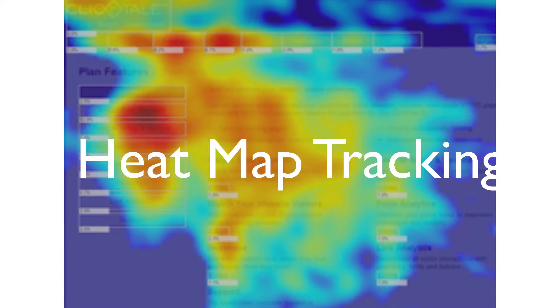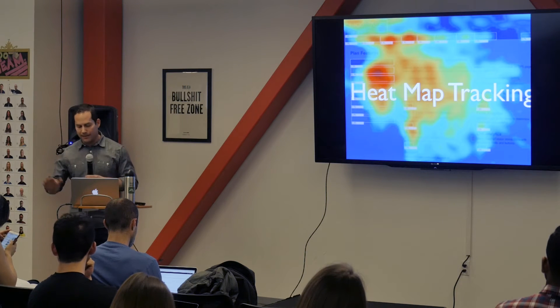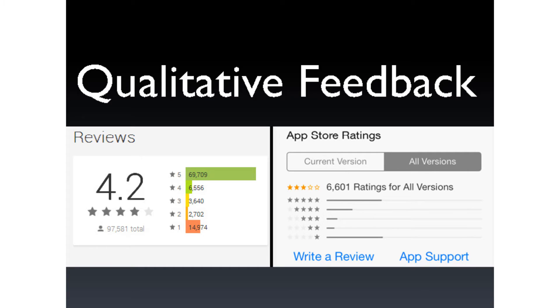Heatmap tracking and click-mapping software are great ways to reveal the disconnect between what you think the important elements on a page are versus what your users think. We've been doing a lot of this at AllTrails lately and it's uncovered so many hypotheses for us. Another great source is qualitative feedback — reading your app reviews, net promoter score open-ended responses, auditing customer support calls, emails, live chats, and doing user surveys.